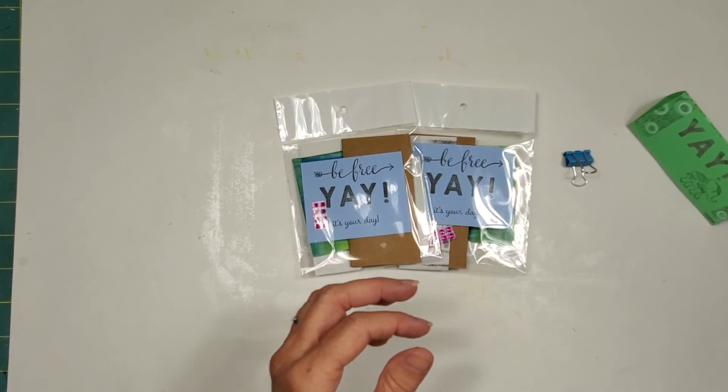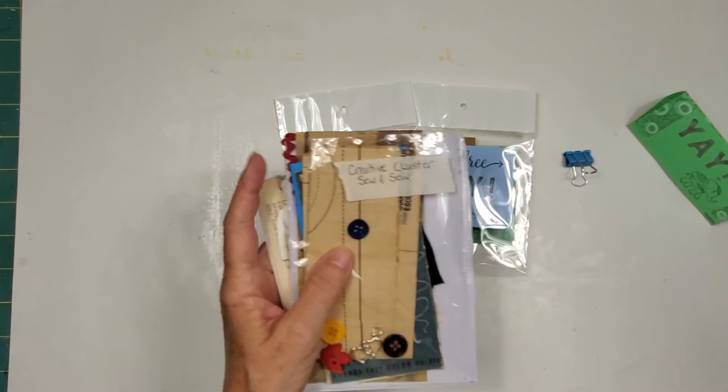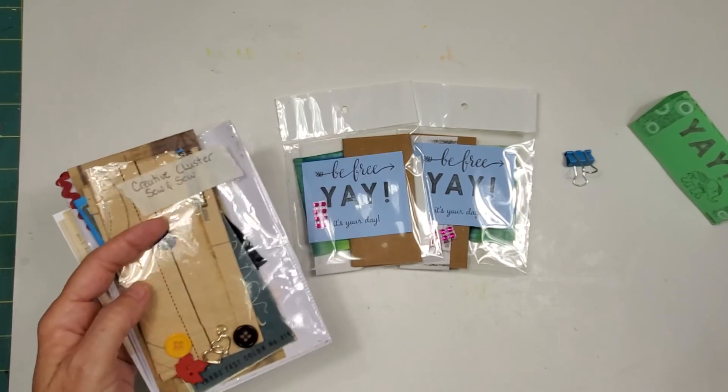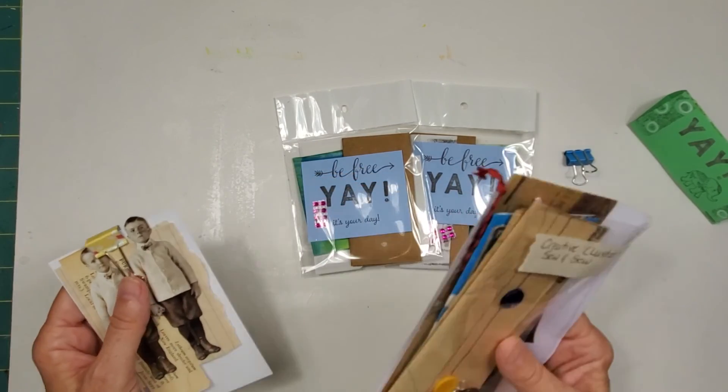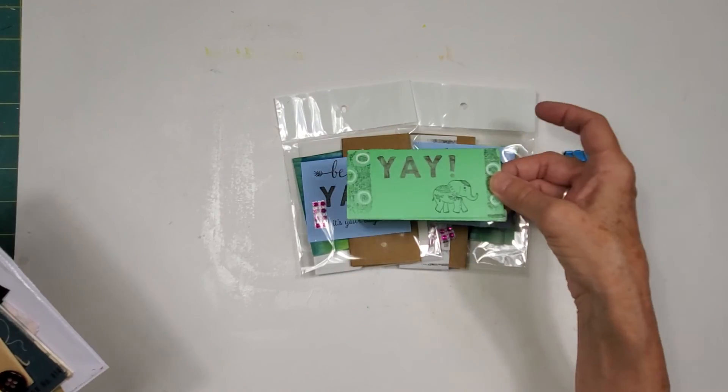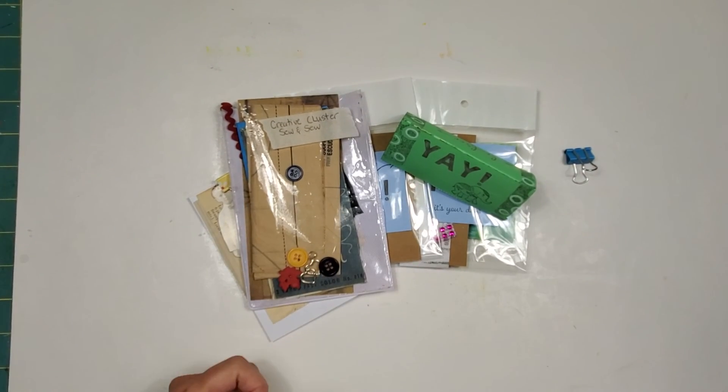So my friends, we've got so-and-so, we've got ABC one, two, three, that's scattered over there. I showed you ABC one, two, three, and we've got our desk sitter project. So I hope that you guys enjoy these creative cluster kits.